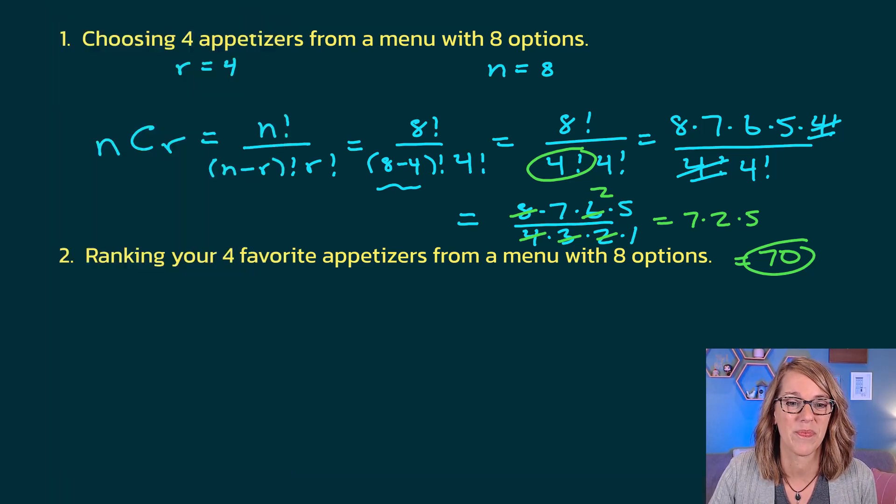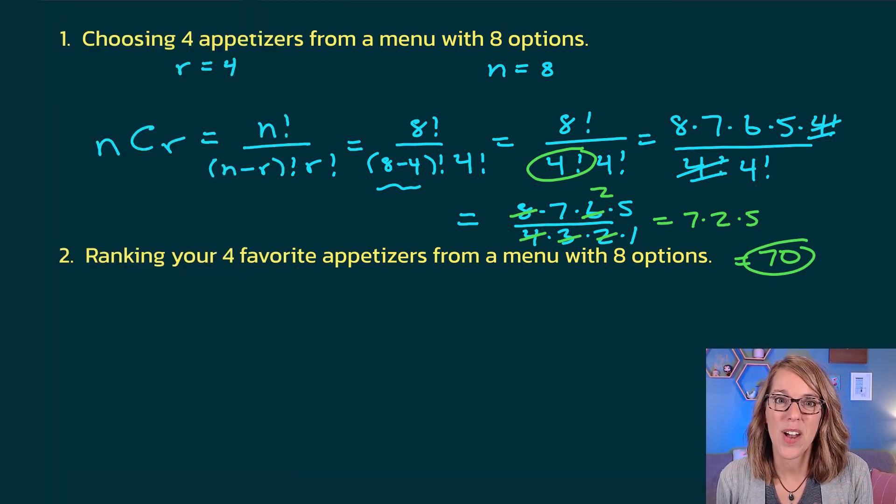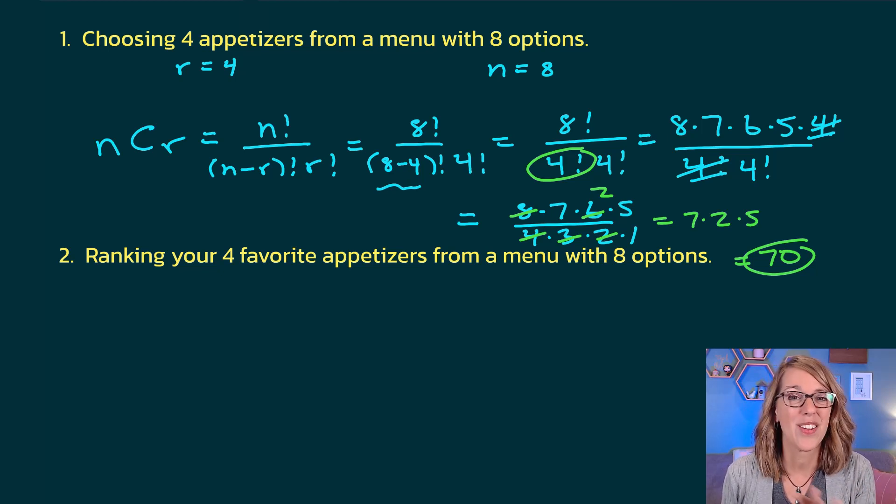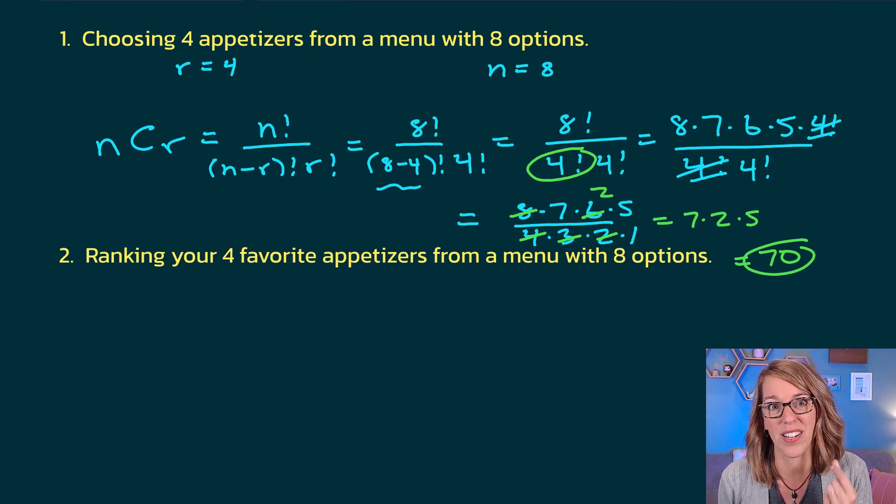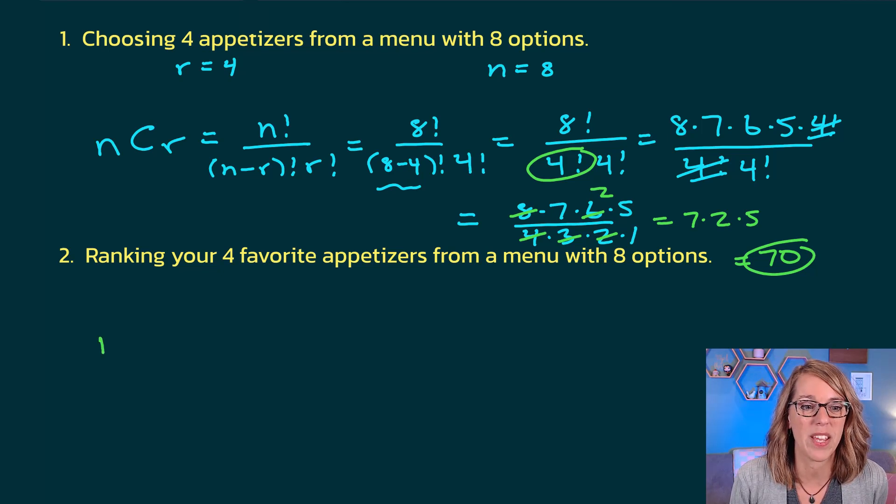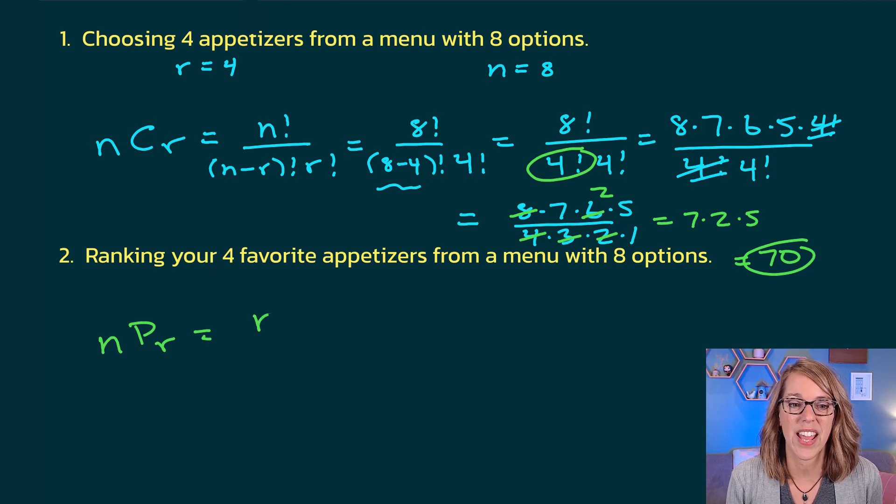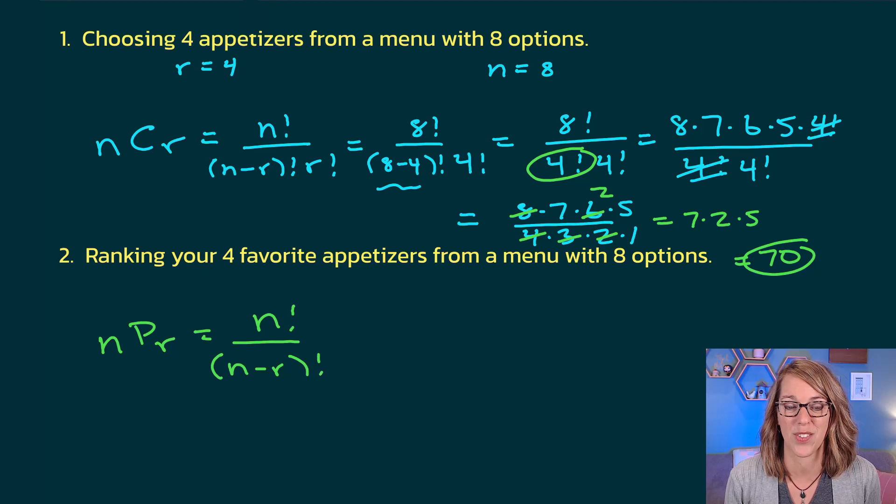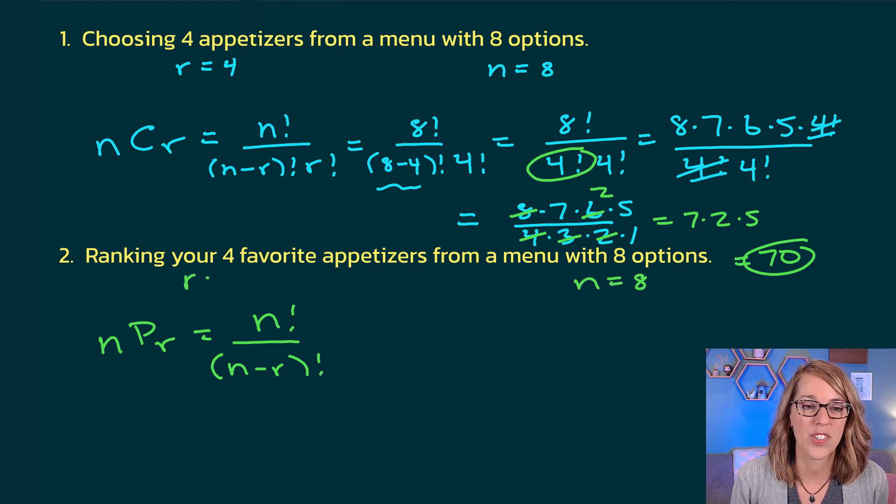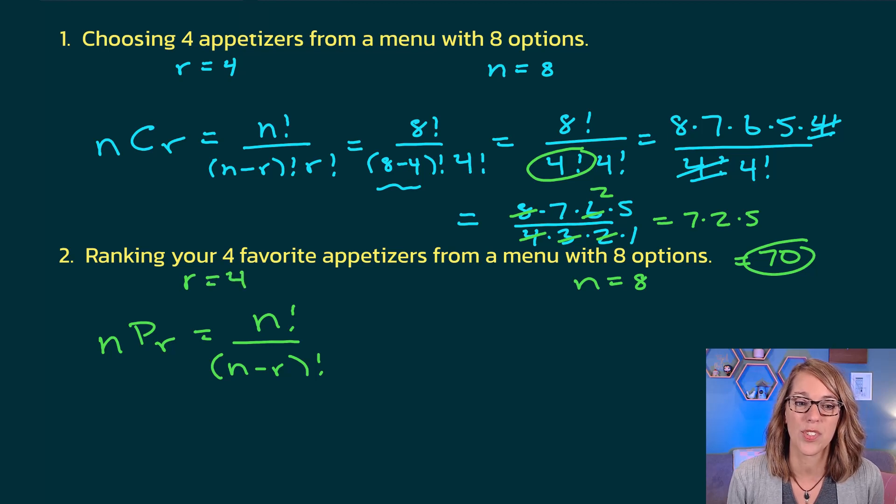Let's look at that next example. In example number 2, I'm going to be ranking my top 4 appetizers out of the 8. So order definitely matters because I can switch my top favorite appetizers. So I'm going to be using a permutation for this one. It would be NPR. The formula for the permutation is N factorial divided by (N minus R) factorial. N for this one is still equal to 8, and R, what we're choosing, is still equal to 4.